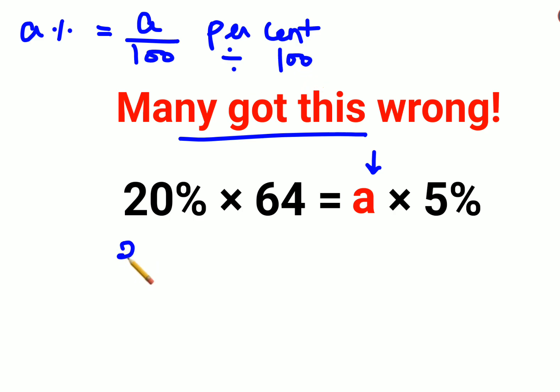So here this becomes what? 20 upon 100 × 64 = A × 5 upon 100.